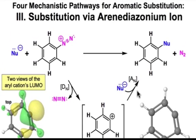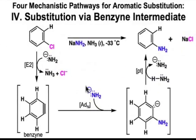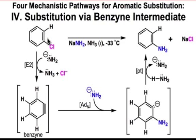In the final pathway, we see an example of elimination followed by addition. In the presence of a strong base like amide, a benzene ring that has a good leaving group like chloride and adjacent to it a hydrogen atom, it's possible to do an E2 elimination and create a new carbon-carbon triple bond in this six-membered ring.